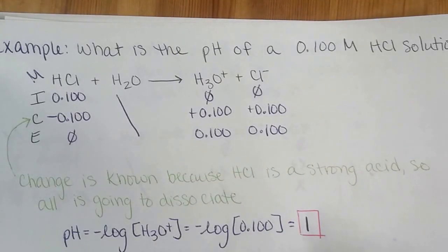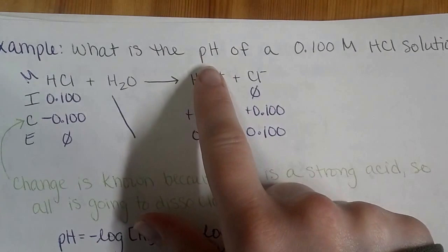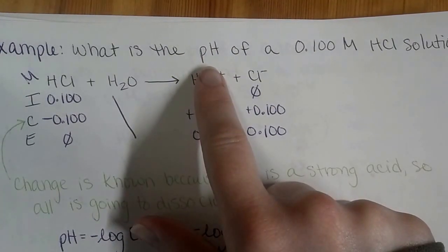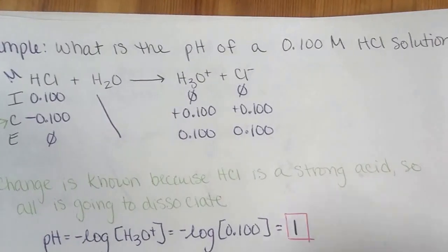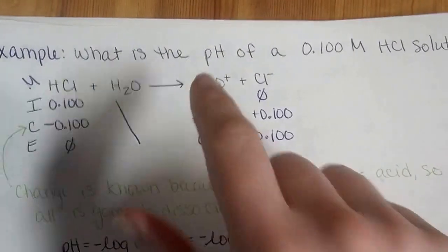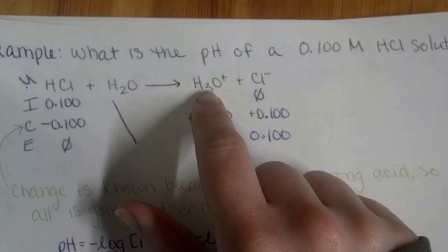All right, so we want to calculate what is the pH of a 0.100 molar HCl solution. We need the concentration of H3O+, that's what pH depends upon.